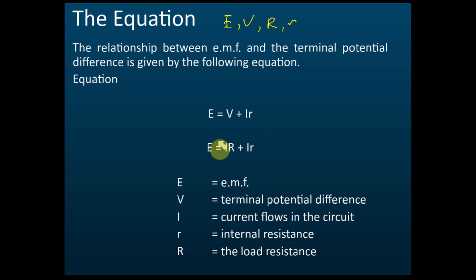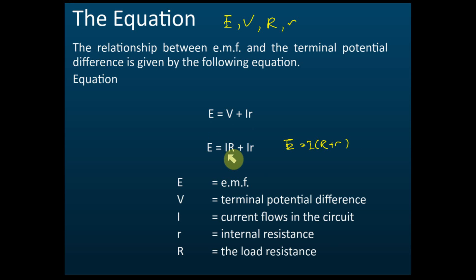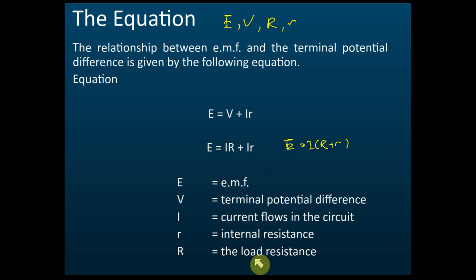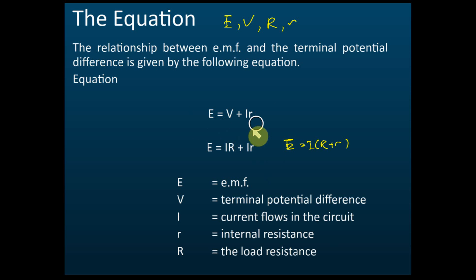E equals V plus ir, or E equals i times capital R plus small r. The factorized form becomes i brackets capital R plus small r. Here, E is the EMF, V is the terminal potential difference, i is the current, small r is the internal resistance, and capital R is the load resistance. These two equations are used to calculate the EMF and internal resistance.